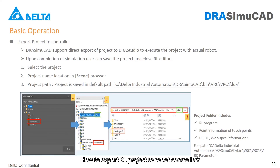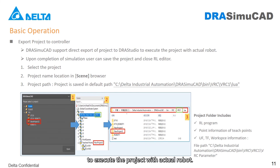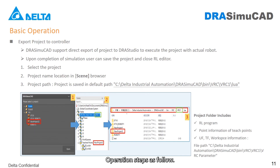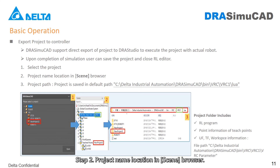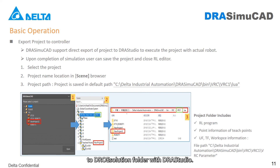How to export Aisle Project to Robot Controller: DIA Simu can support direct export of a project to DIA Studio to execute the project with an actual robot. Upon completion of simulation, the user can save the project and close Aisle Editor. Operation steps: Step 1, select the project. Step 2, locate the project name in the scene browser. Step 3, copy the project folder from the default path and paste the folder to the DIA Solution folder with DIA Studio. Demo video as follows.